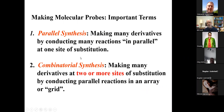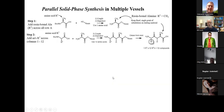I'll start by discussing synthetic procedures and methodologies used to make large compound libraries. First is parallel synthesis — conducting many simultaneous reactions side by side with only one site of substitution. Then there's combinatorial synthesis, which has two or more sites of substitution. Like the antibody process with two amino acid positions — 20 times 20 gives 400 combinations — combinatorial synthesis enables much larger libraries from a limited set of starting materials.